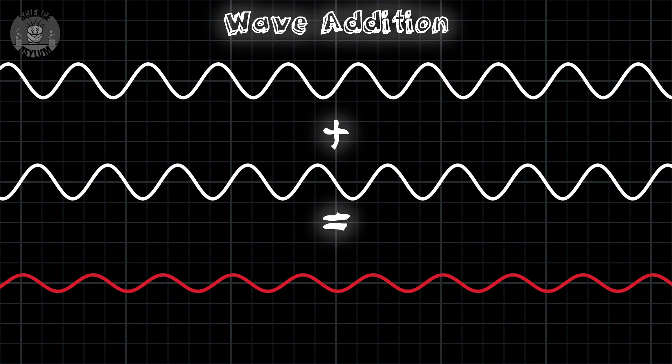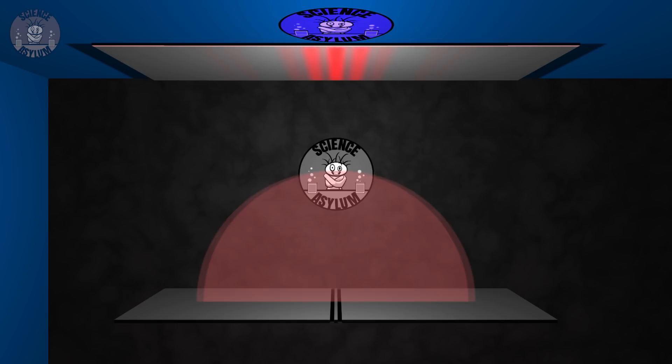Anyway, constructive and destructive interference aren't the only two options. There are many gradual levels of brightness in between, depending on how the waves meet each other. With our double slit, we basically have two independent sources of light. They look like this from behind. Because those slits are narrow, the light from each slit will spread out. If each slit is sending out its own light waves, those waves are going to overlap and interfere with each other.